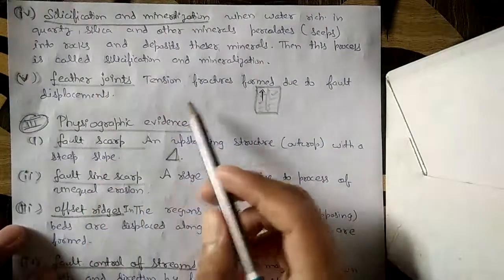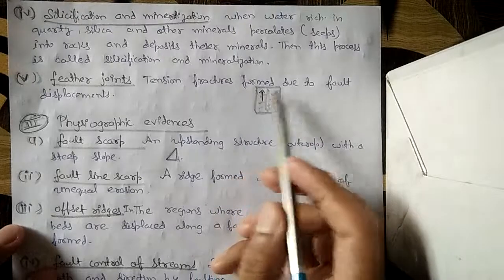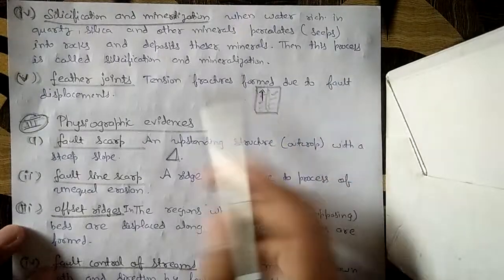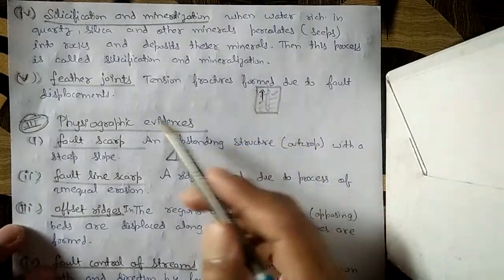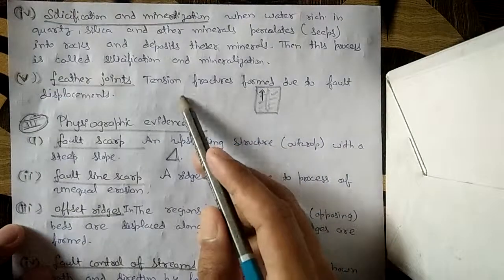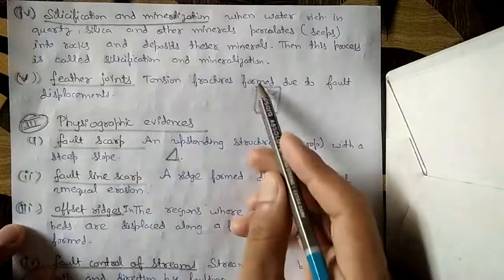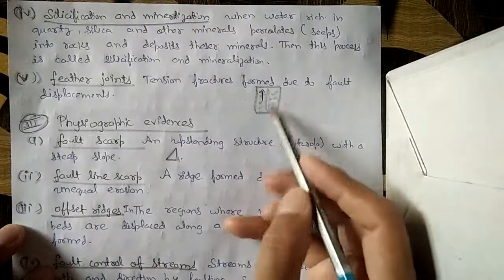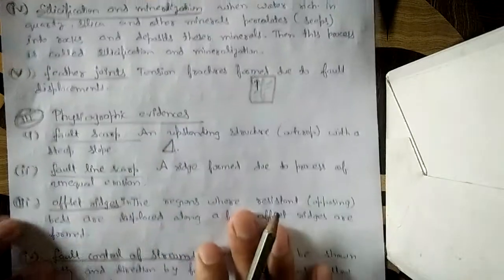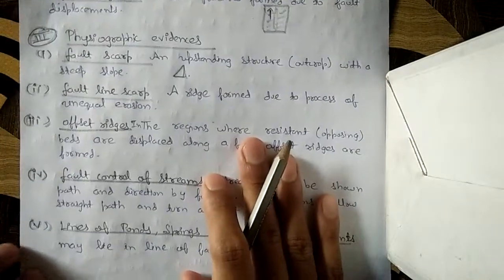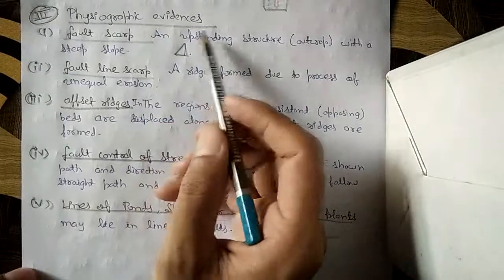Feather joints are tension fractures formed due to fault displacement. Fractures formed by tensional forces due to fault displacement are called feather joints. This forms a feather-line structure. We now move to the third categorization: physiographic evidences.